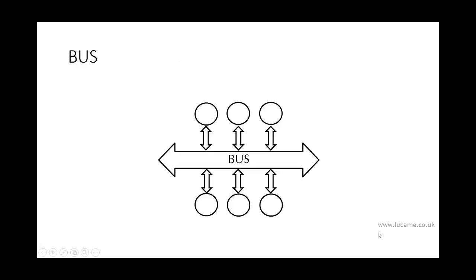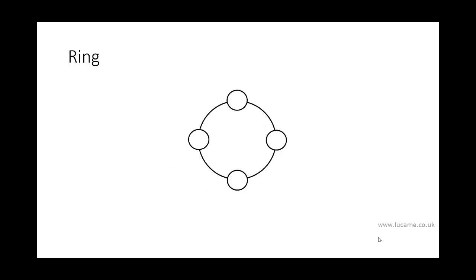Bus topology: in the early days of Ethernet, each end station was connected to an Ethernet cable providing a common channel. Only one station could transmit at any time, and its data could be received by any other station on that cable, allowing any station to broadcast to all others. Ring topology: in token ring, data is passed in a ring from one station to another, but the network is physically connected in a star topology via a central MSAU. This illustrates the difference between logical topology — how the network behaves — and physical topology.